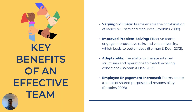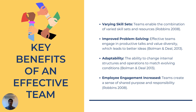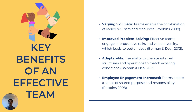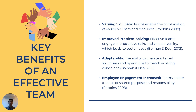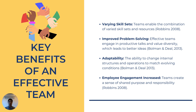Now let's talk about the key benefits of an effective team. First, having a diverse skill set where everyone brings something unique to the table — it's like making a complex dish with all different ingredients. Second is better problem solving: when people brainstorm together, they have more ideas and better solutions. Third is adaptability — good teams can change and adjust easily based on the environment. Fourth is having more engaged employees: when people feel part of a team, they're generally happier and do better at their job.